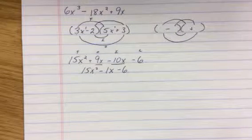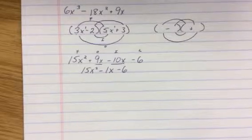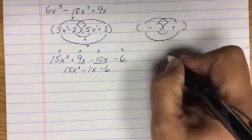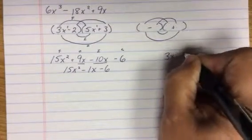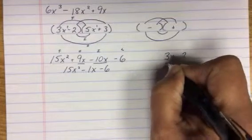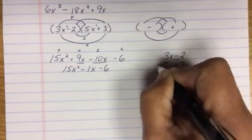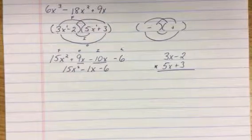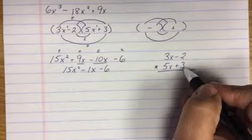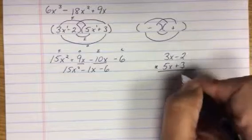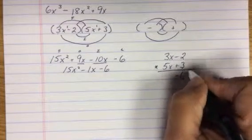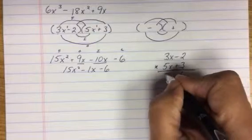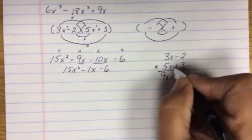There is another way of doing this if you do not like FOIL, and that's vertically, like we do long multiplication. So we go 3 times negative 2 gives me negative 6. 3 times 3x gives me 9x. I step over.